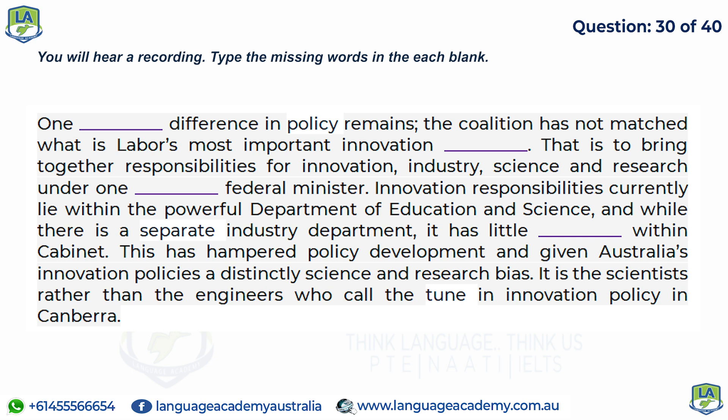The coalition has not matched what is Labor's most important innovation promise — that is, to bring together responsibilities for innovation, industry, science, and research under one single federal minister. Innovation responsibilities currently lie within the powerful Department of Education and Science, and while there is a separate industry department, it has little influence within cabinet. This has hampered policy development and given Australia's innovation policies a distinctly science and research bias. It is the scientists rather than the engineers who call the tune in innovation policy in Canberra.